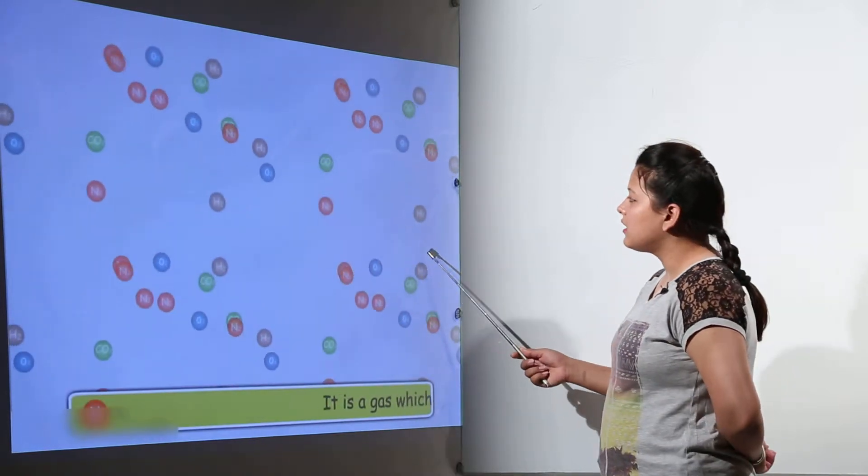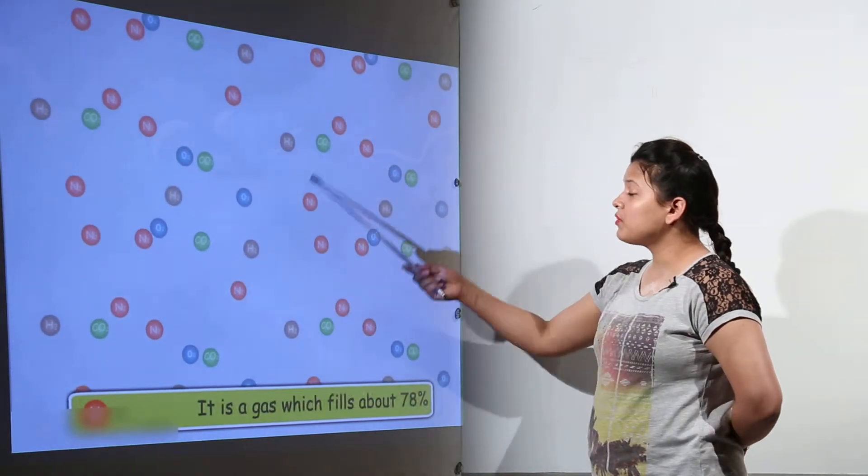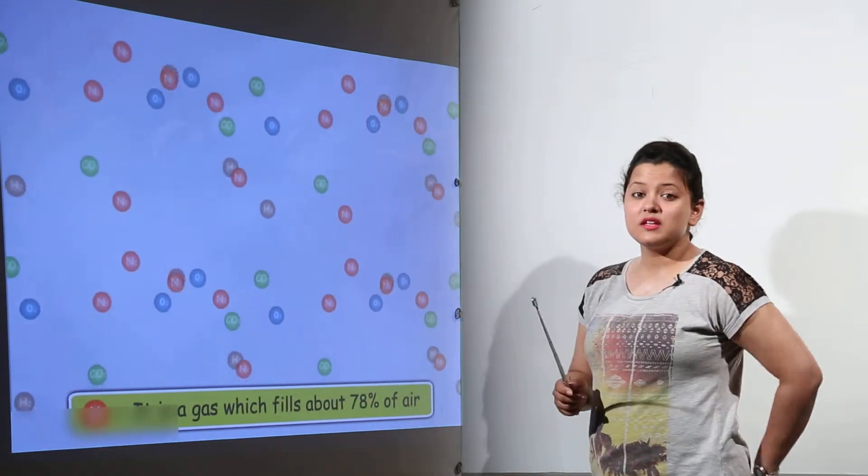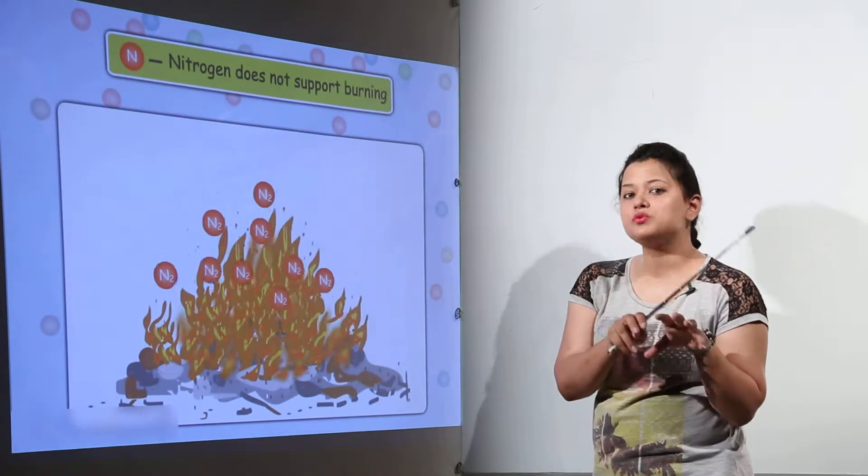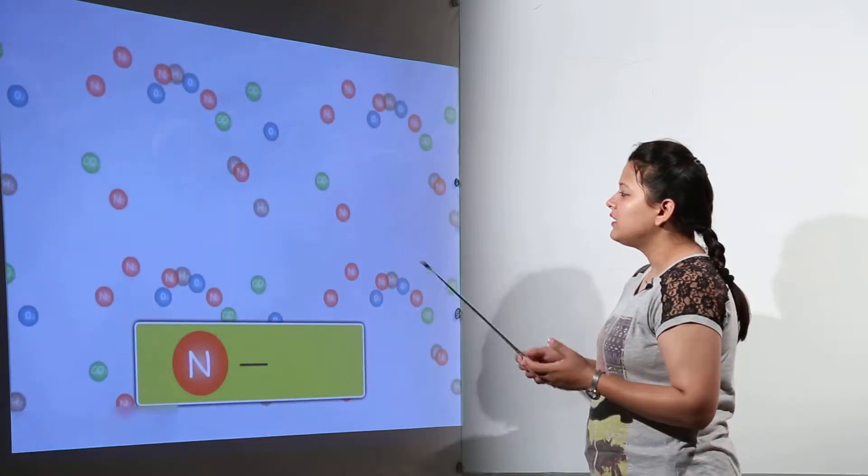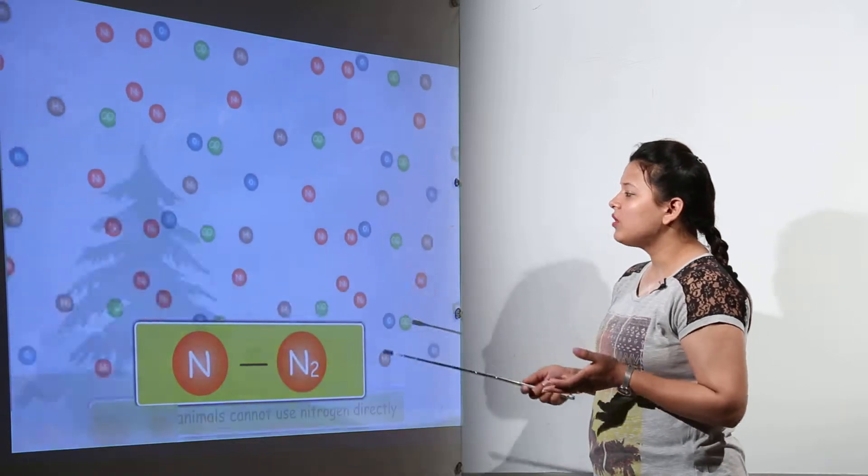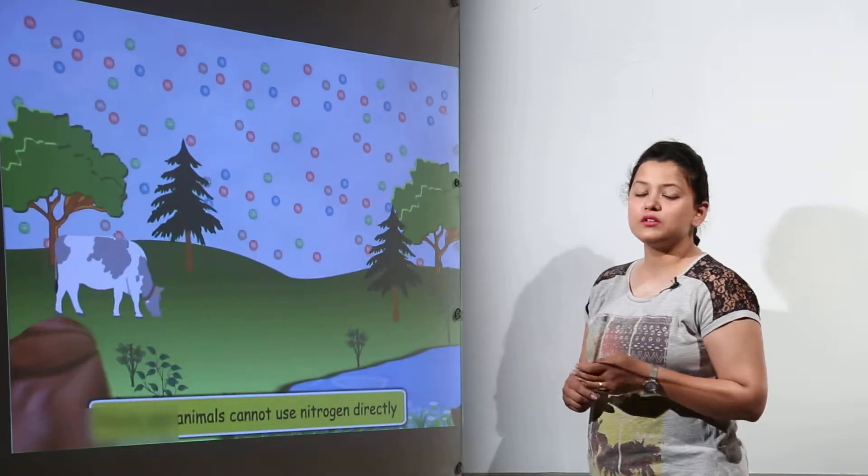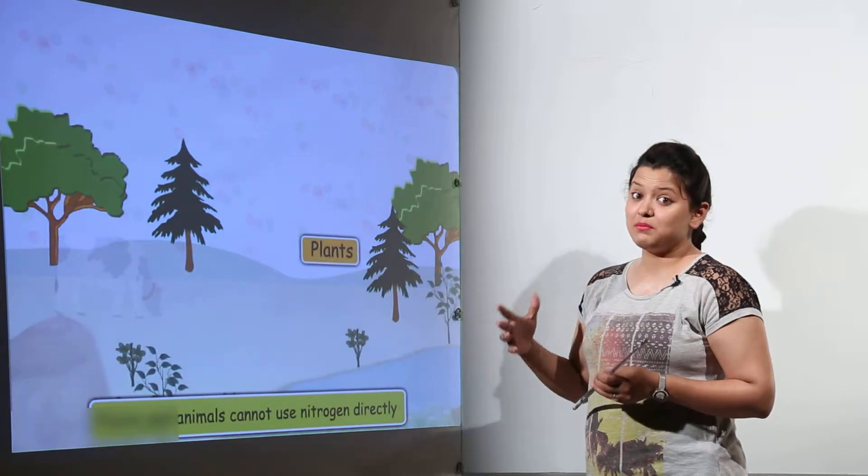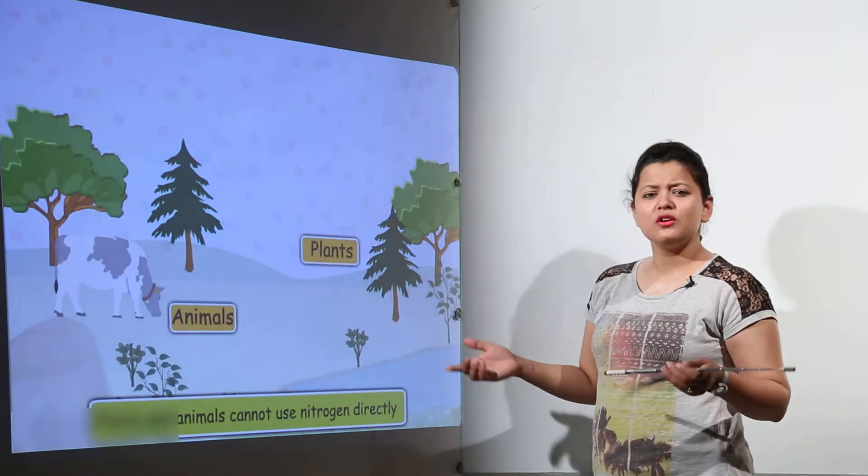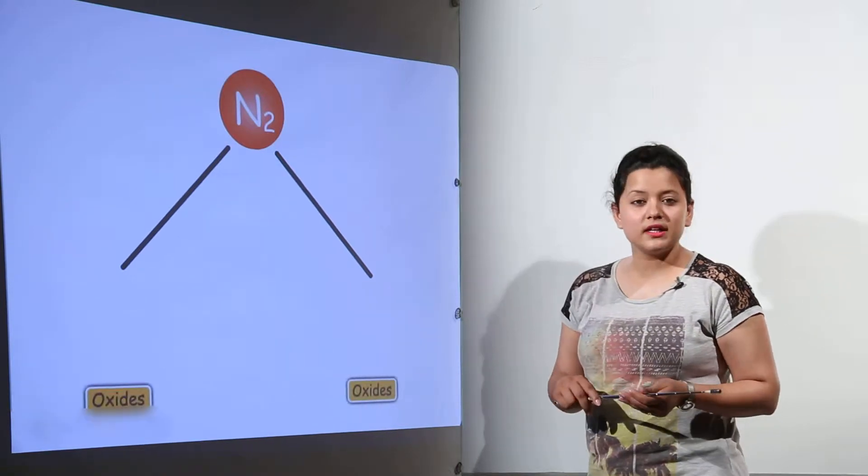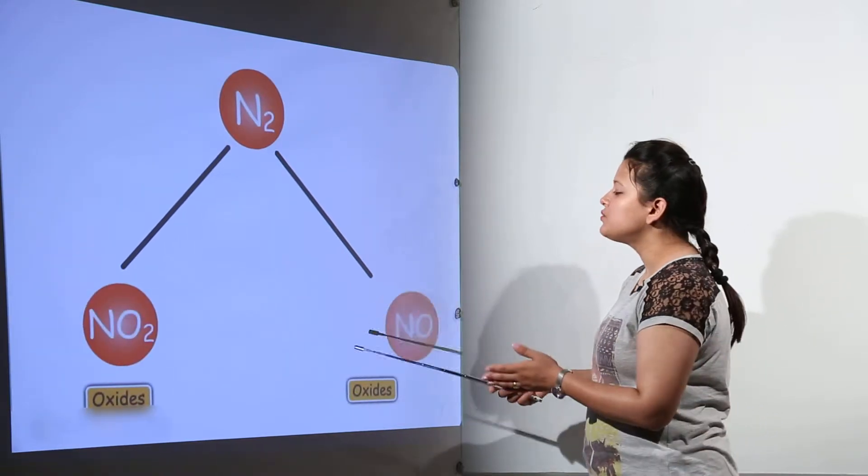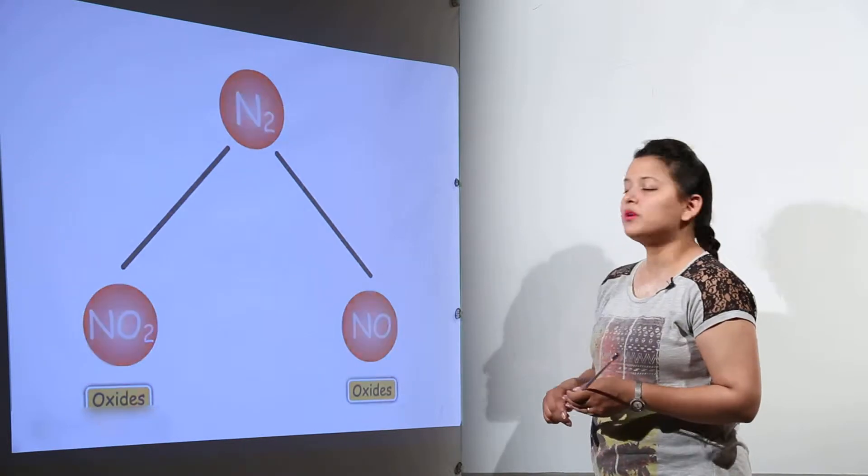Nitrogen is a gas which comprises approximately 78% of air. It does not support burning and is always present in some form. Despite being in such large quantity, it cannot be consumed or used by plants and animals directly. It is present in two types of oxides: NO2 and NO.